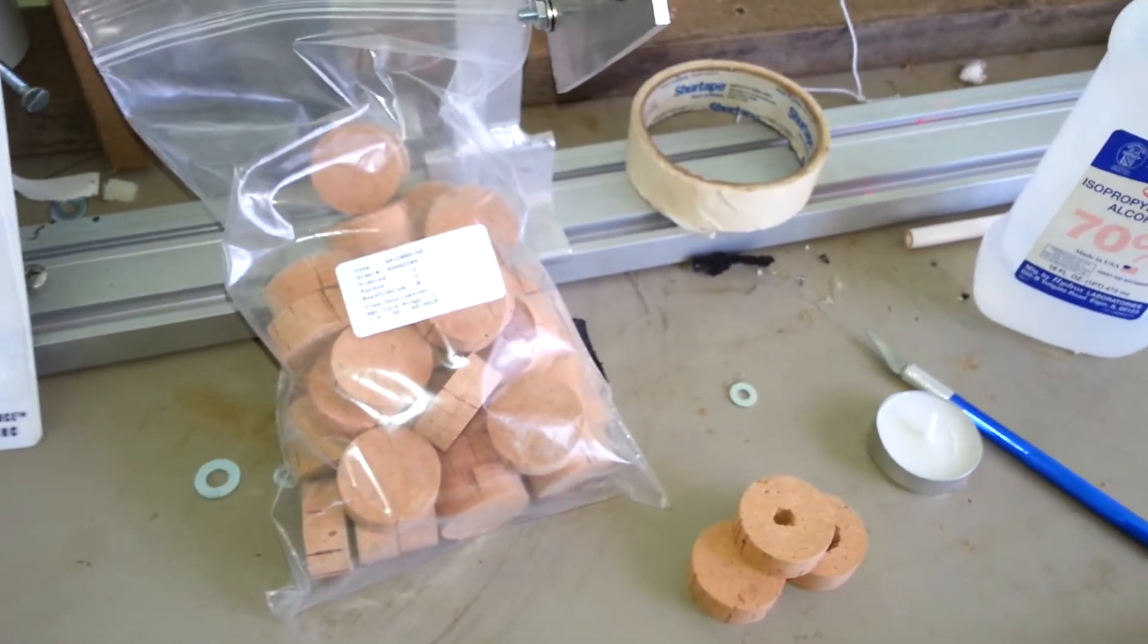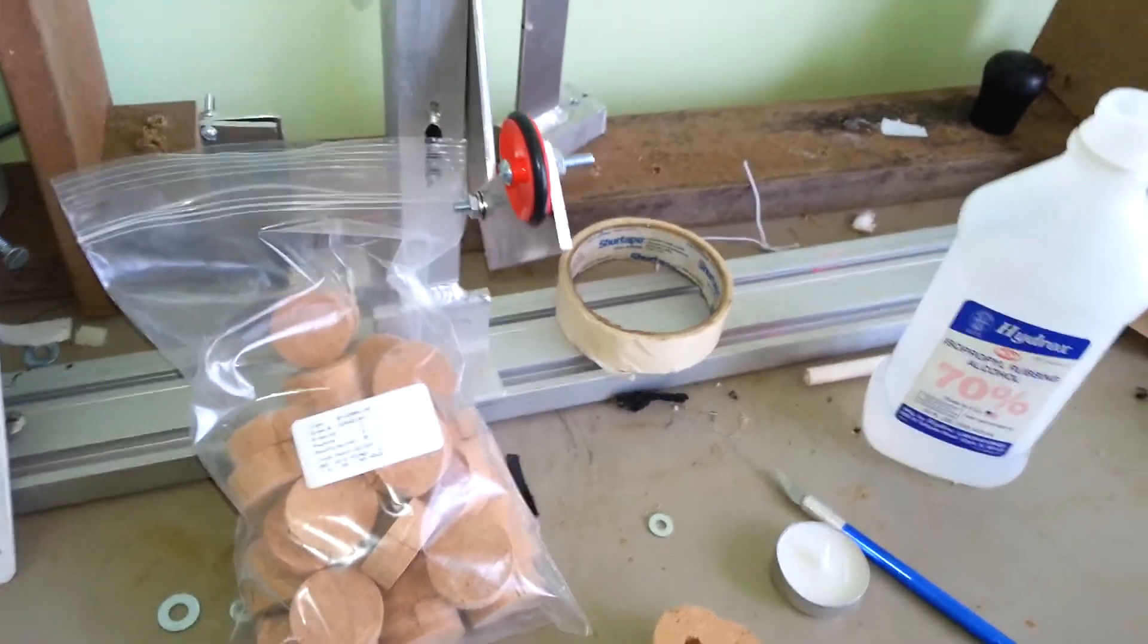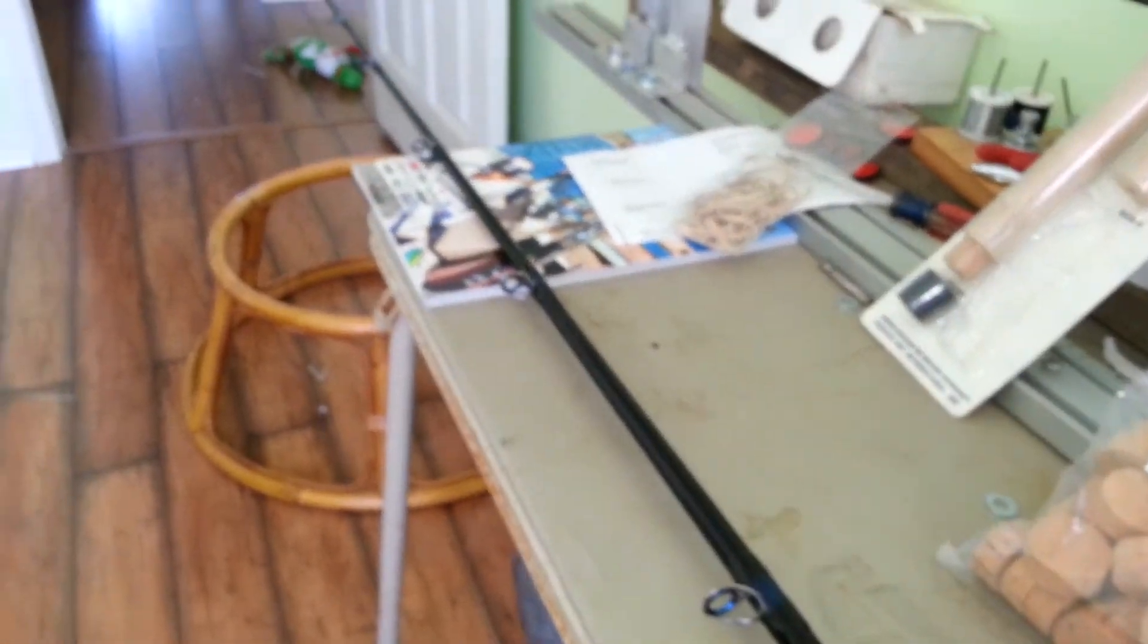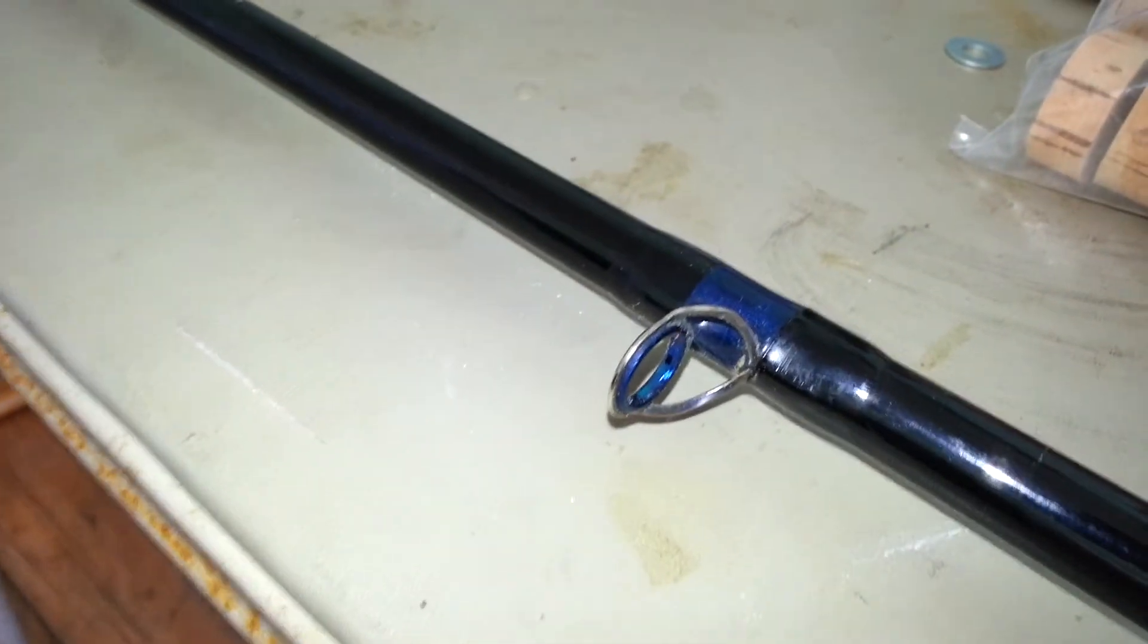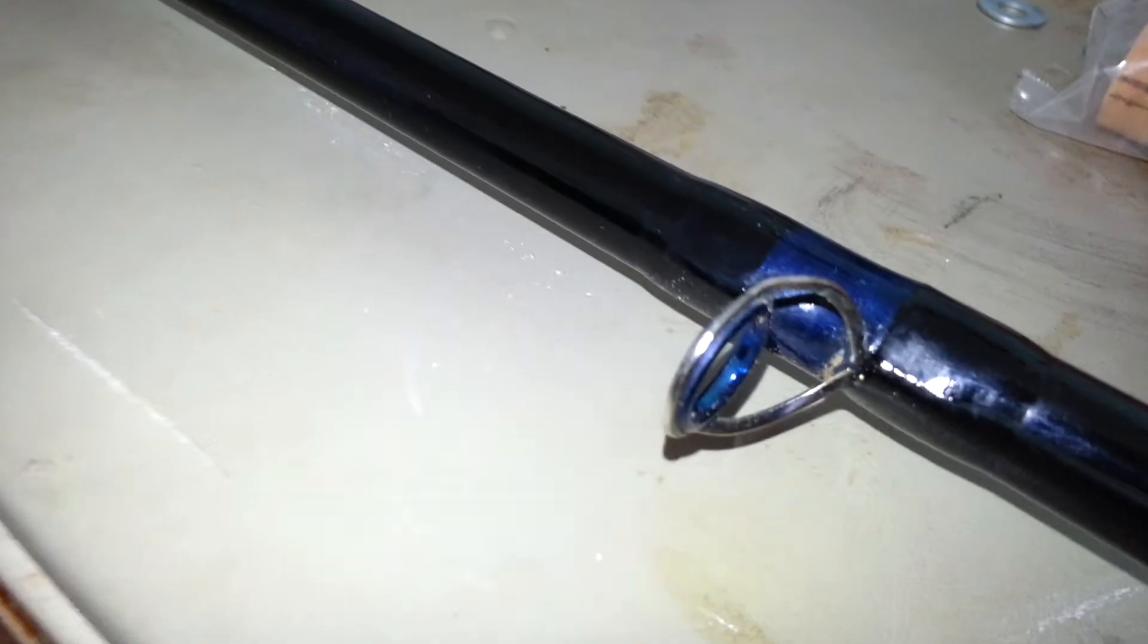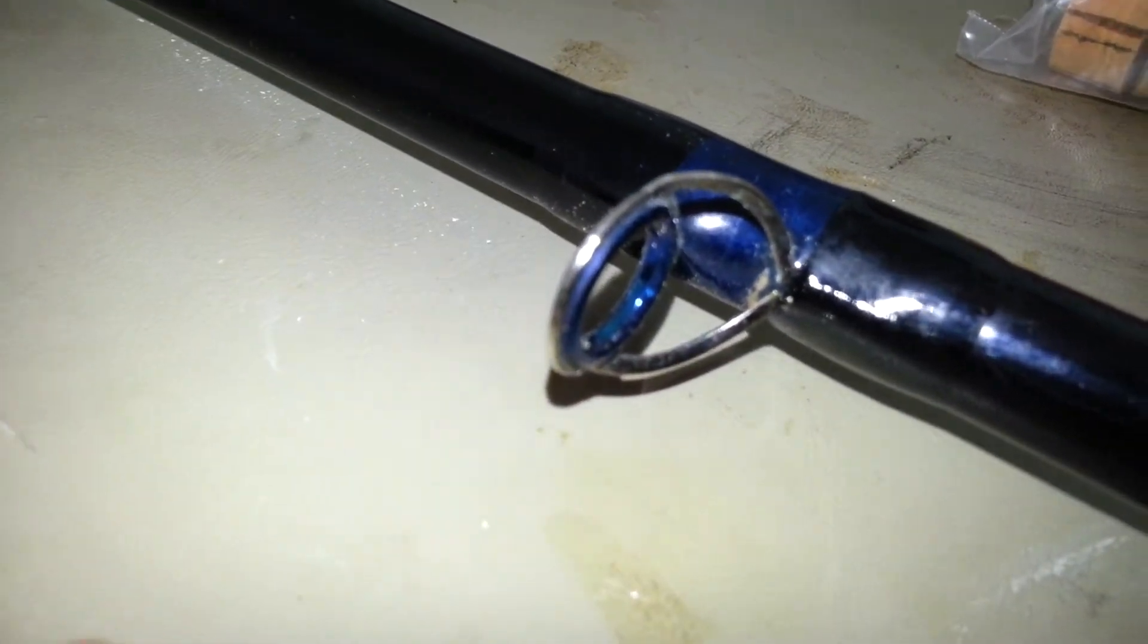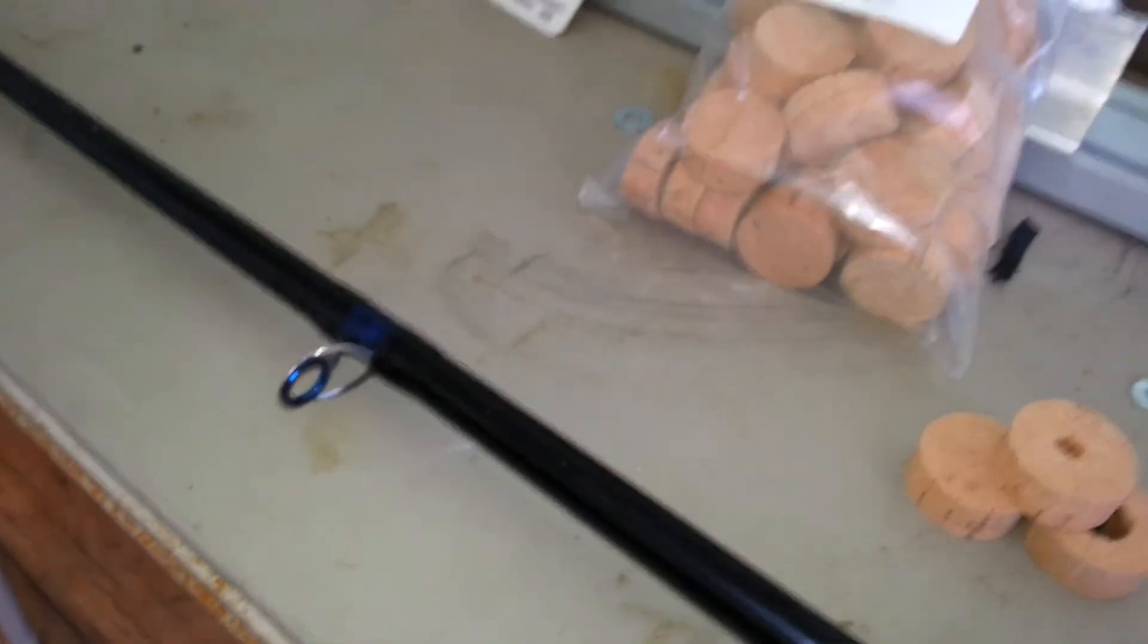Next up, we're going to remove the guides. I use a candle to heat the epoxy up a little bit, get your exacto knife and cut right on the metal of the guide foot and peel it off, and repeat on all the rest of the guides.